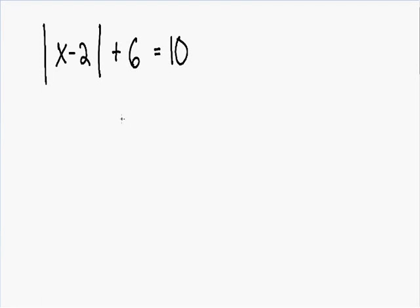Welcome to my video on solving absolute value equations. Here we have the absolute value of x minus 2 plus 6 is equal to 10. Our first step is to get the absolute value on one side of the equation and get everything else on the other.